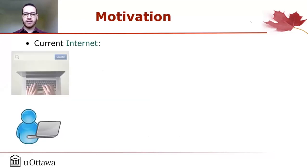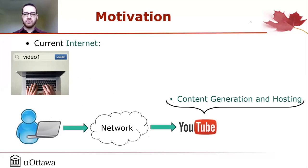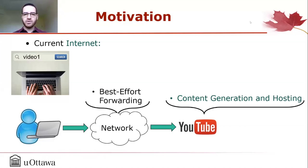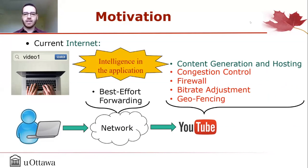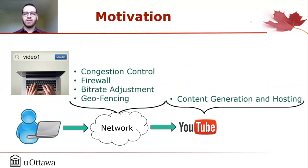Let's start with the motivation. In the current internet, consider the example of a user who wants to access a video hosted on YouTube. When the user queries the video, it is forwarded to the YouTube application server, whose main objective is content generation and hosting. However, the current network usually only offers best-effort forwarding. So the YouTube server also needs to handle several content delivery tasks like congestion control, firewall, bitrate adjustments, and geofencing. Hence, most of the intelligence is in the application. The main question our work tries to answer is: can we put these content delivery tasks inside the network instead of having them done by the application?